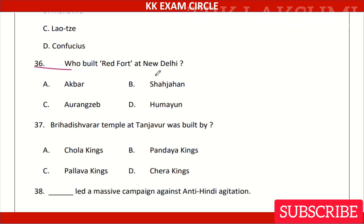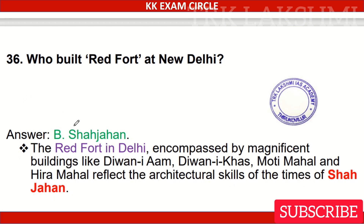Question 6. Who built the Red Fort at New Delhi? Option A: Akbar. Option B: Shah Jahan. Option C: Aurangzeb. Option D: Humayun. Answer: Option B, Shah Jahan.